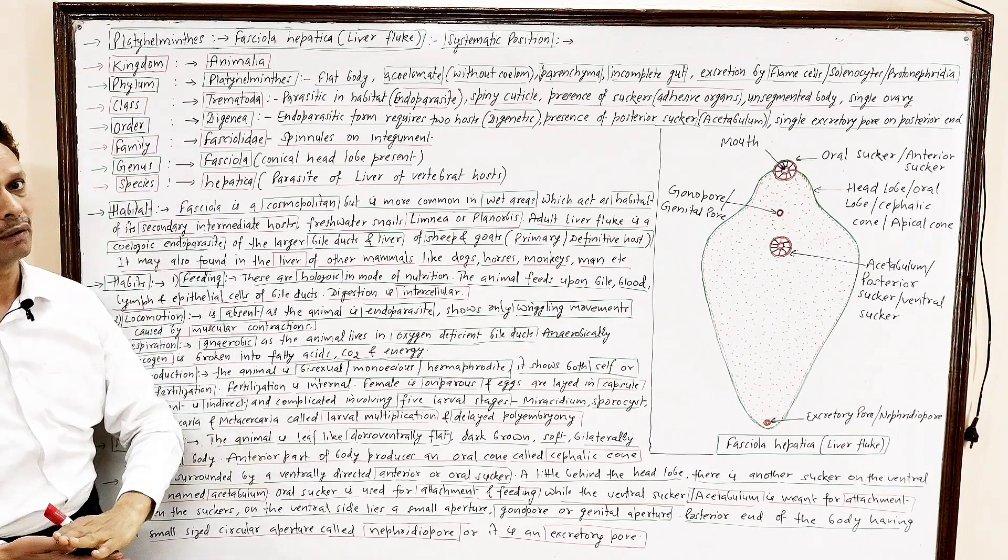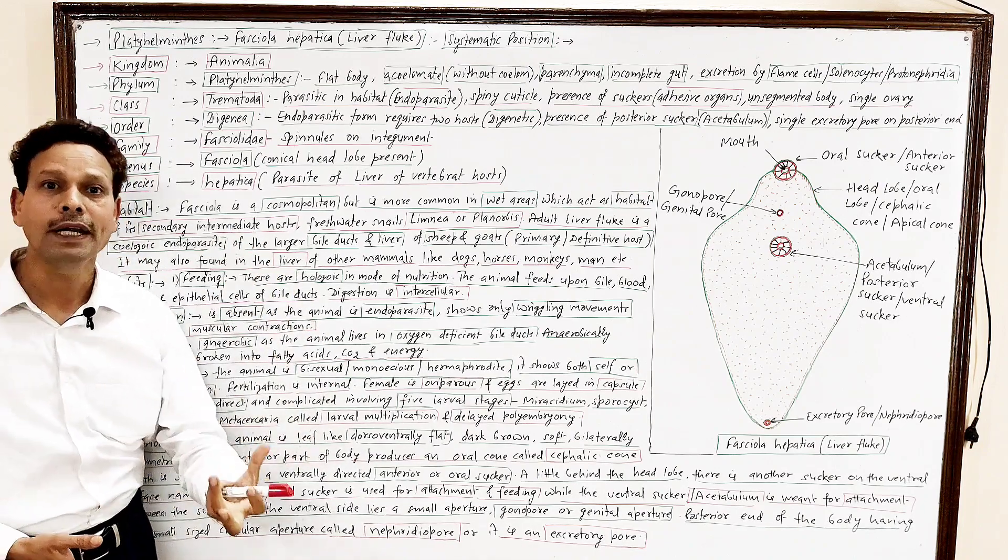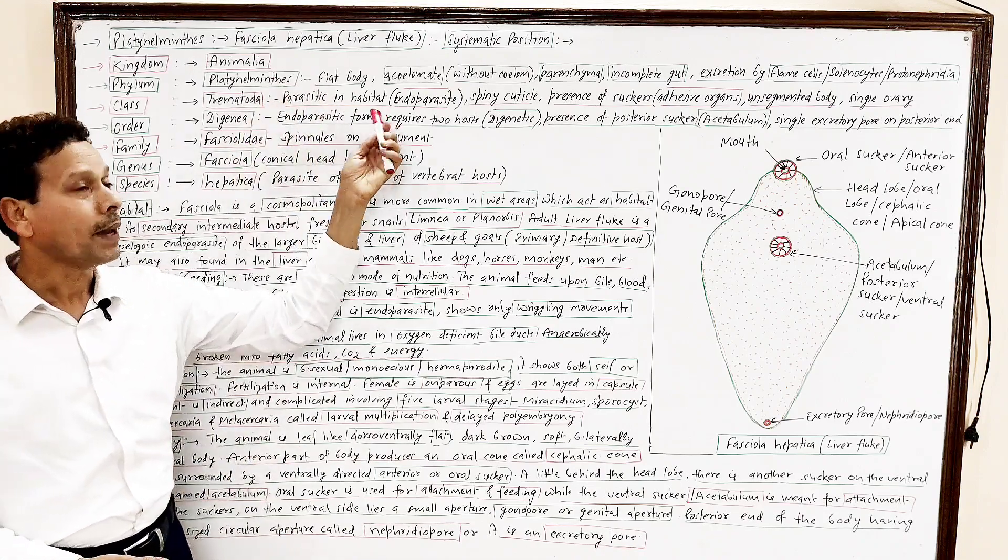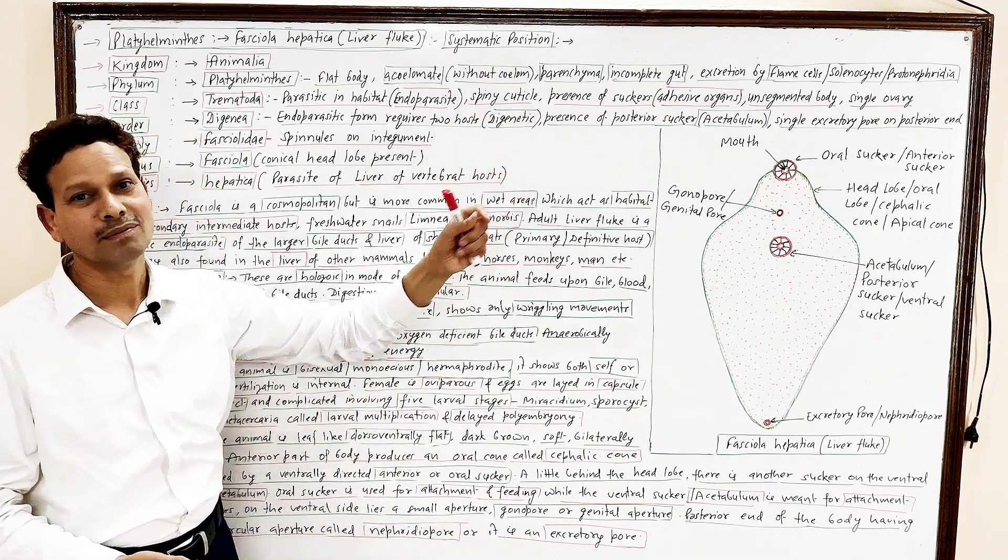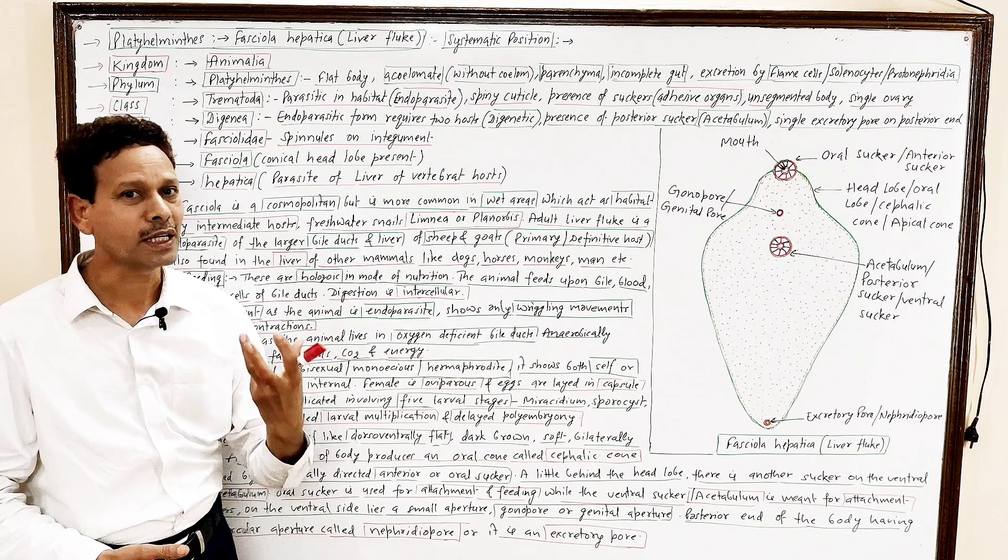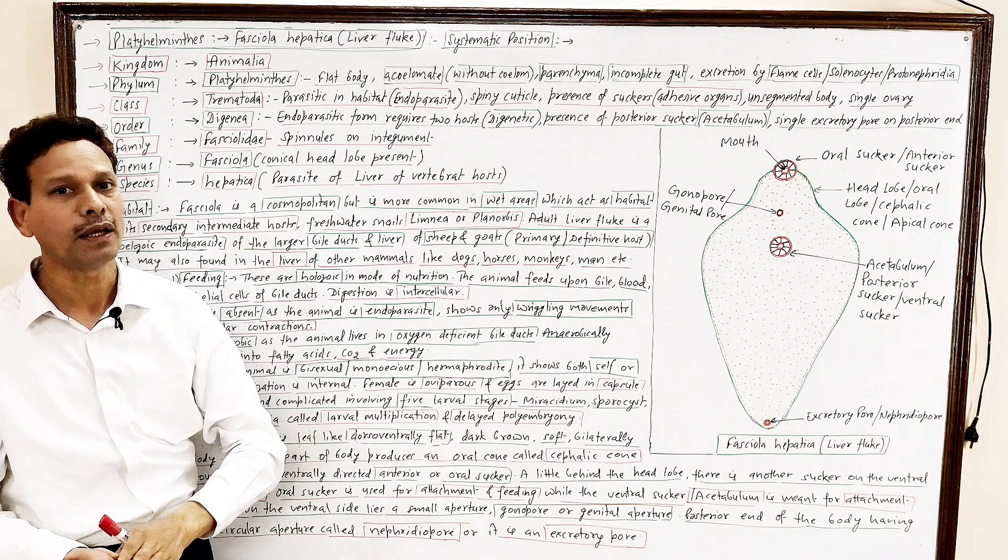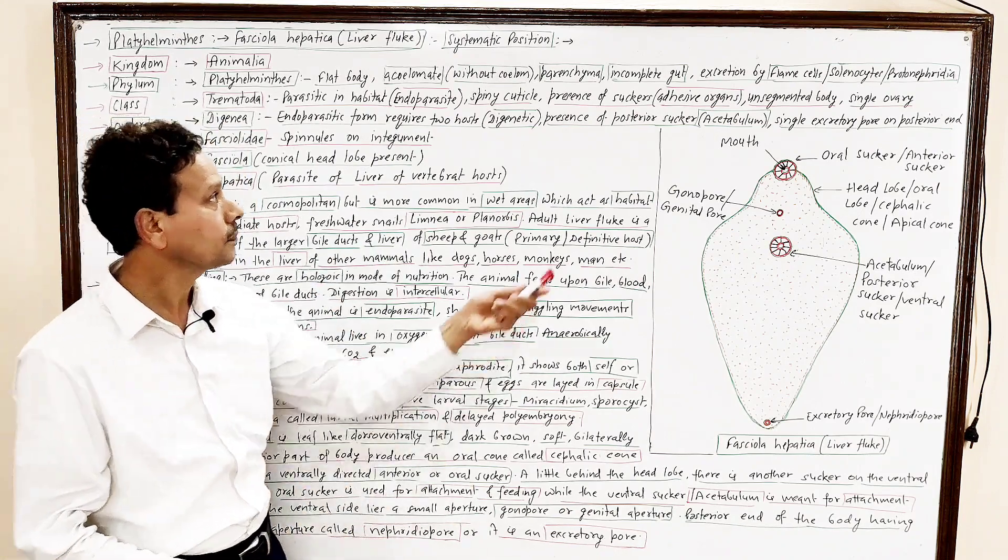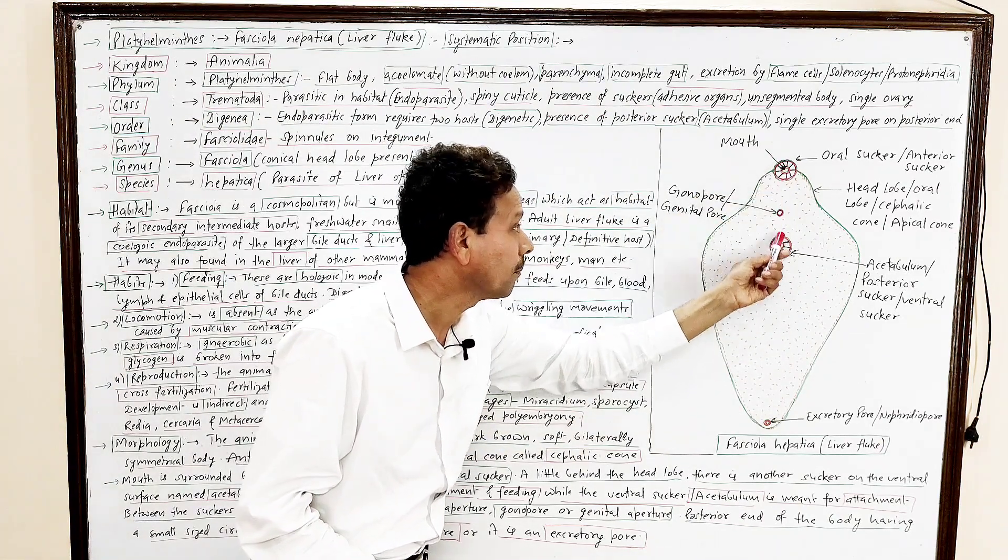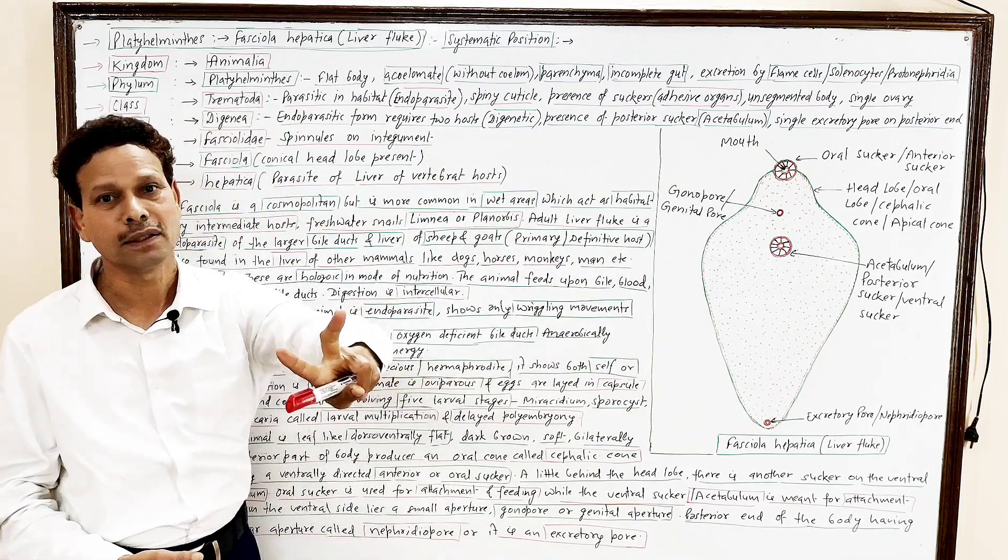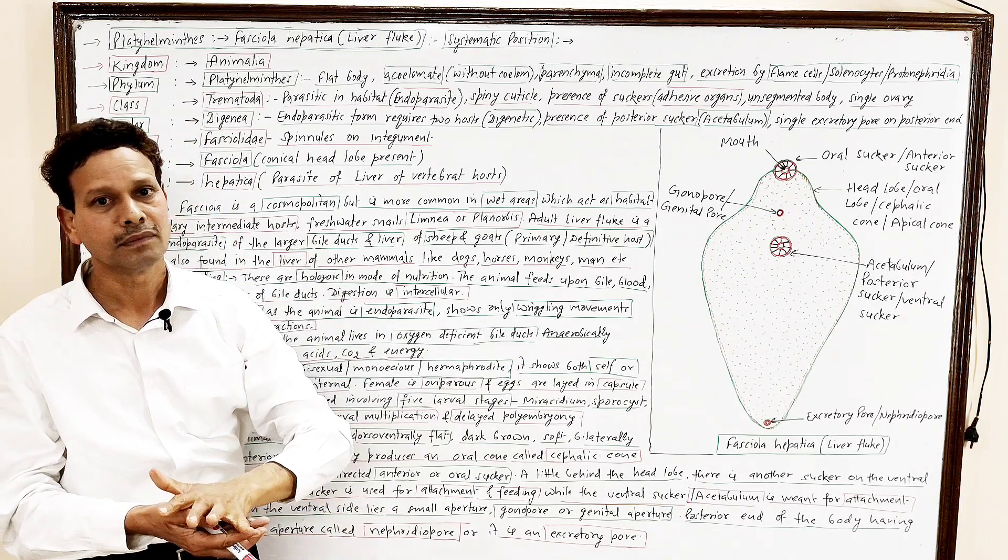That is Trematoda. It means these worms, endoparasites, are commonly named flukes. Parasitic in habitat, endoparasite. Spiny cuticle. Their integument, their skin, tegesis, cuticular projections, spines, for the fixation of body with the host. Presence of suckers, these are on their surface. Anterior and posterior, two suckers are present. These are adhesive organs by which this parasite gets attached to host body.